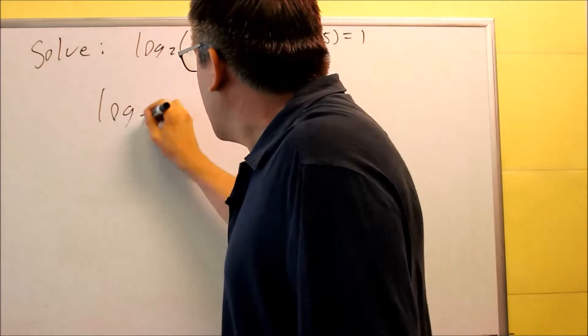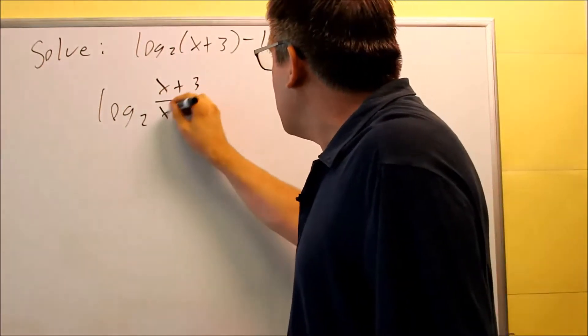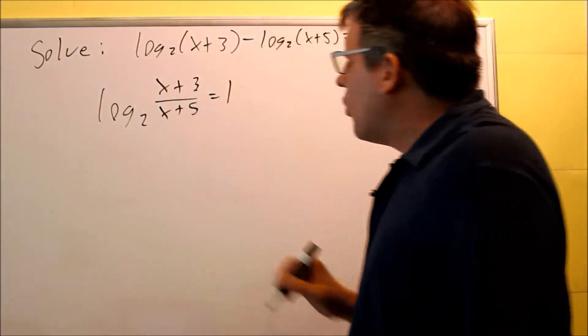Okay, so we have, when you do that, log 2, the first one's going to go on top, I'll have x plus 3, the bottom one's going to be x plus 5. That's going to equal 1.